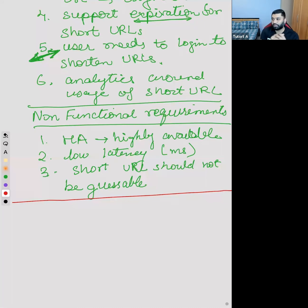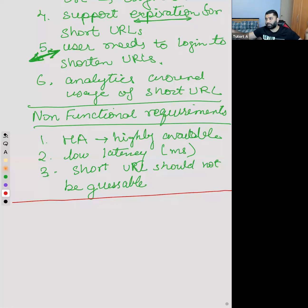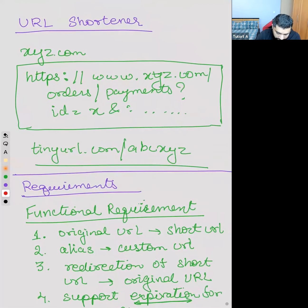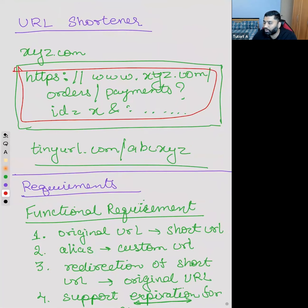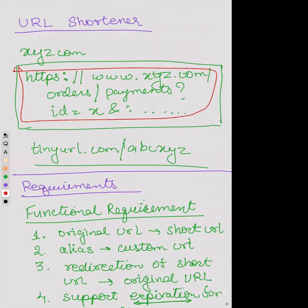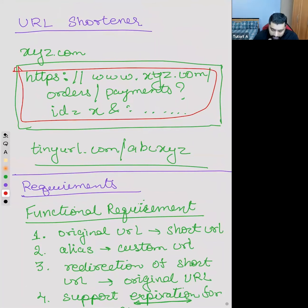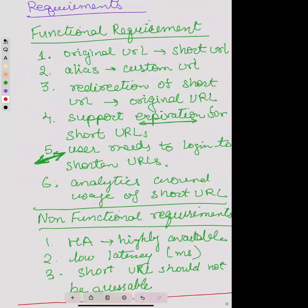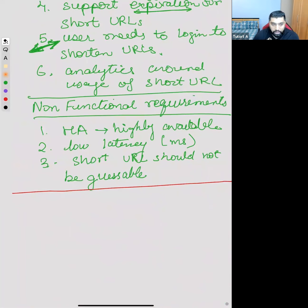When you do capacity estimation in this kind of system, the first thing you need to understand is what kind of system it is: is it a read-heavy or a write-heavy system? Anybody who wants to talk about whether a URL shortener is a read-heavy or write-heavy system? The reads-to-write ratio - I could do something like reads are 100 times more than writes. You write a URL once and read it many times.